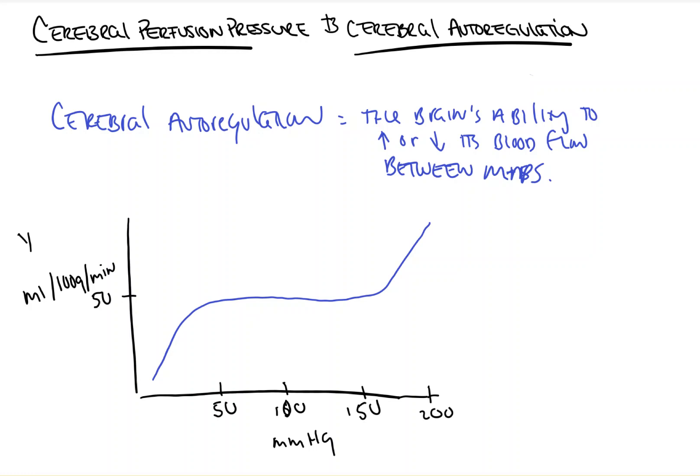And so what a normal curve is going to look like is something approximating this. Meaning that between maps, because this is our MAP down here, between maps of about 50 to 150, 60 to 160, the brain is very good at making sure that its blood flow stays at about 50 ml per 100 grams per minute, either by vasoconstricting or vasodilating, depending on what it needs to do.